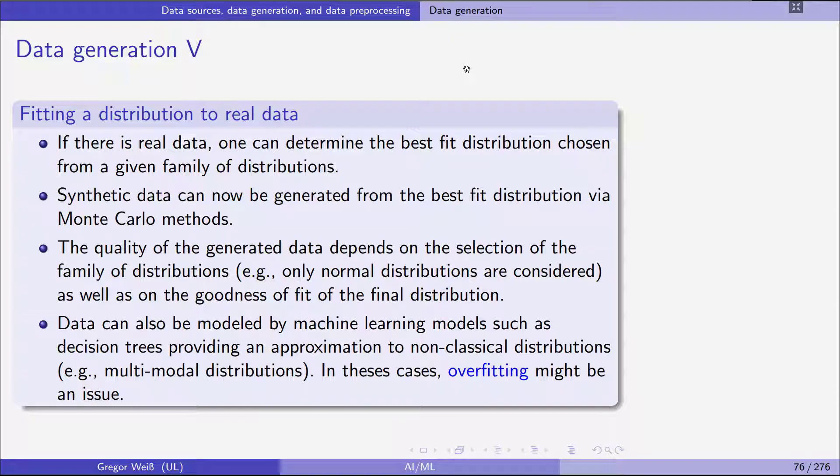Last but not least, you can also use a machine learning model, such as decision trees, providing an approximation to non-classical distributions. For example, if you want to use a multimodal distribution, that is one, for example, that has two humps. And in these cases, overfitting might be an issue. You have to be careful that if you use very complex distributions, you might get overfitting. You might be fitting the distribution also to the noise in the data.